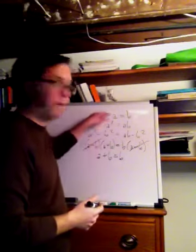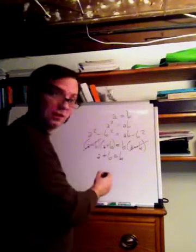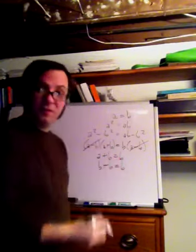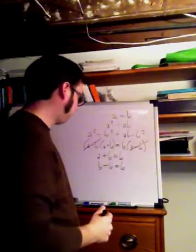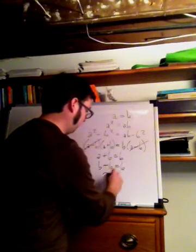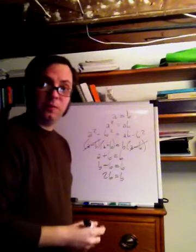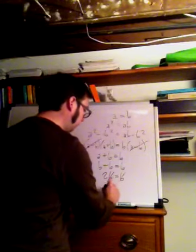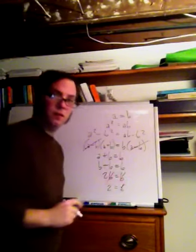But now we recall that a equals b. And so what this really says is that b plus b equals b. Or that 2b equals b. Or, dividing by b, that 2 equals 1.